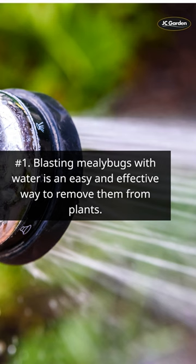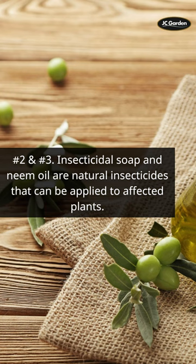Number 2 and Number 3: Insecticidal soap and neem oil are natural insecticides that can be applied to affected plants. Number 4: Rubbing alcohol kills mealybugs on contact and is an effective solution.